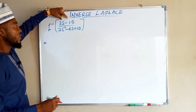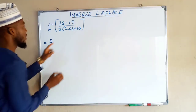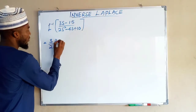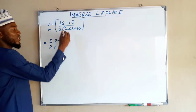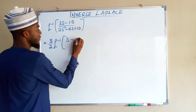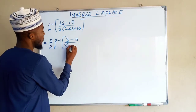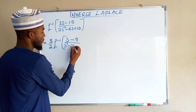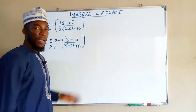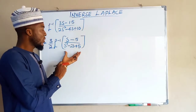First, let us factorize. Between 3s and 15 they have 3 in common, so we factor out 3 from the numerator, leaving s minus 5. Each term in the denominator can be divided by 2, so we factor out 2, leaving s² minus 2s plus 5. We still don't have a recognizable standard form, so we proceed to complete the square.